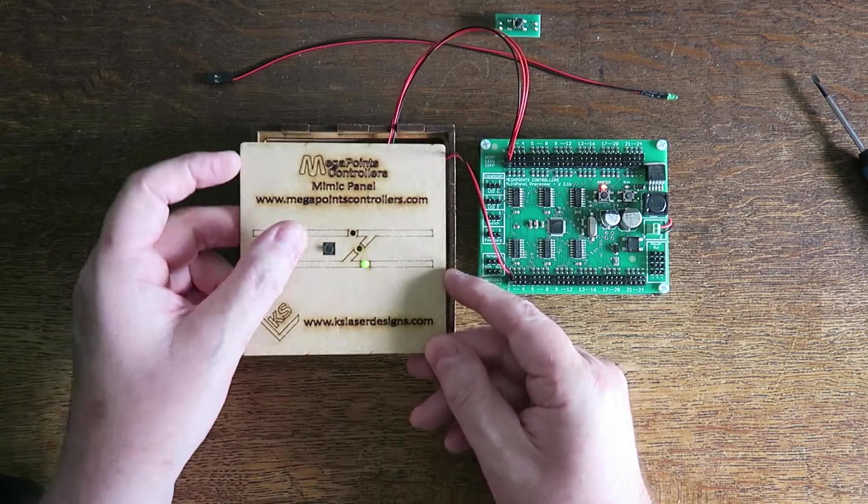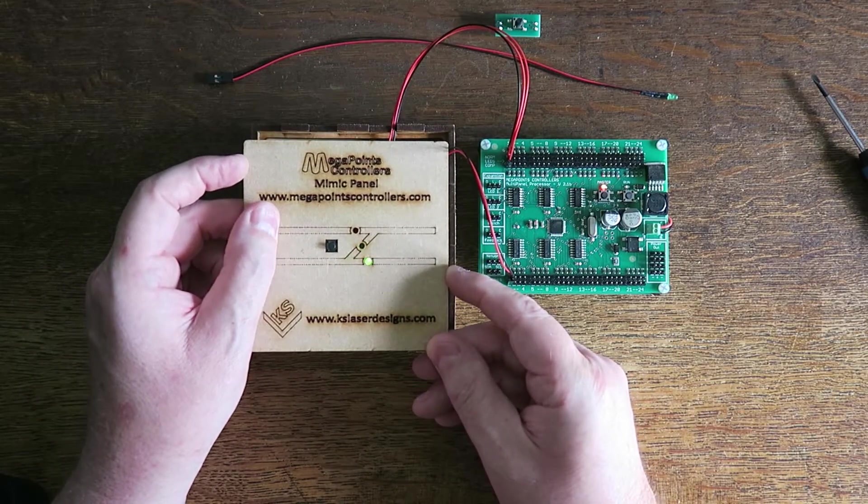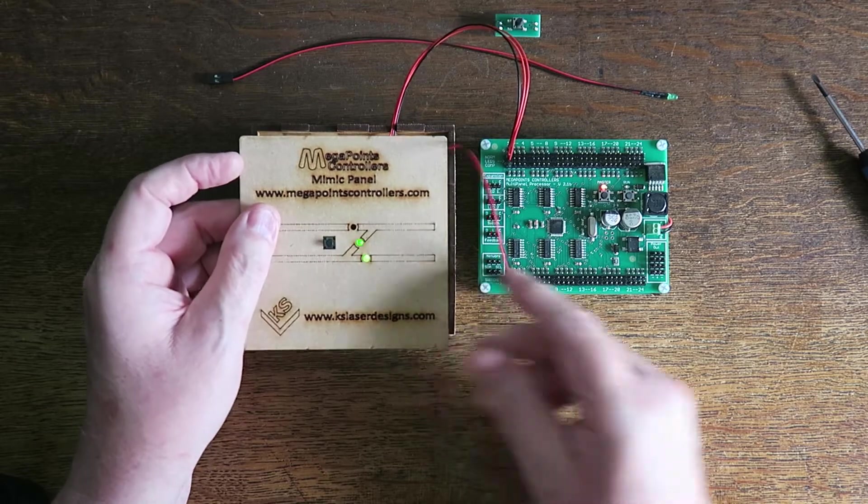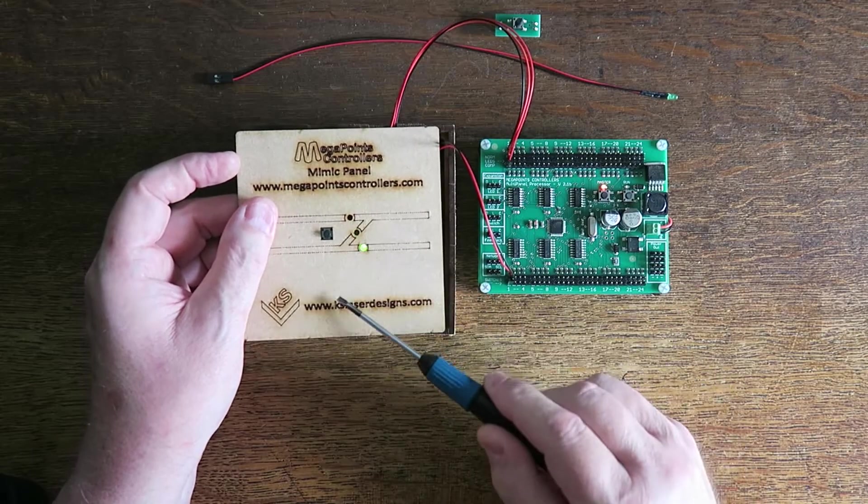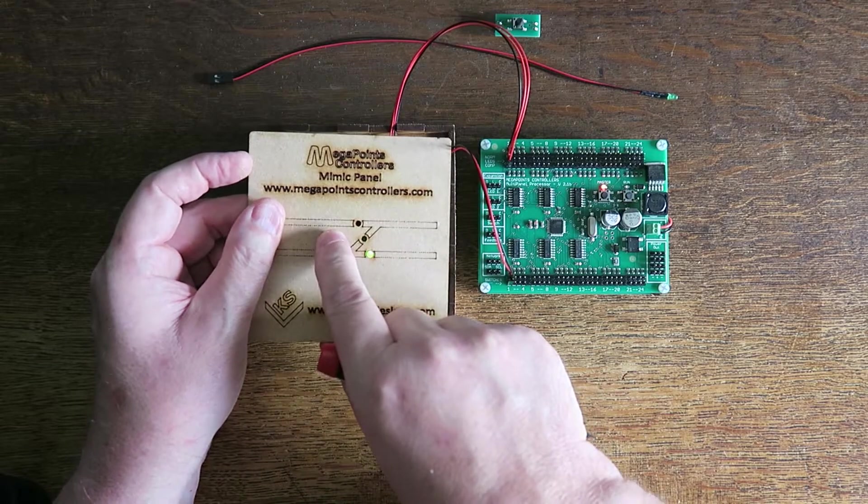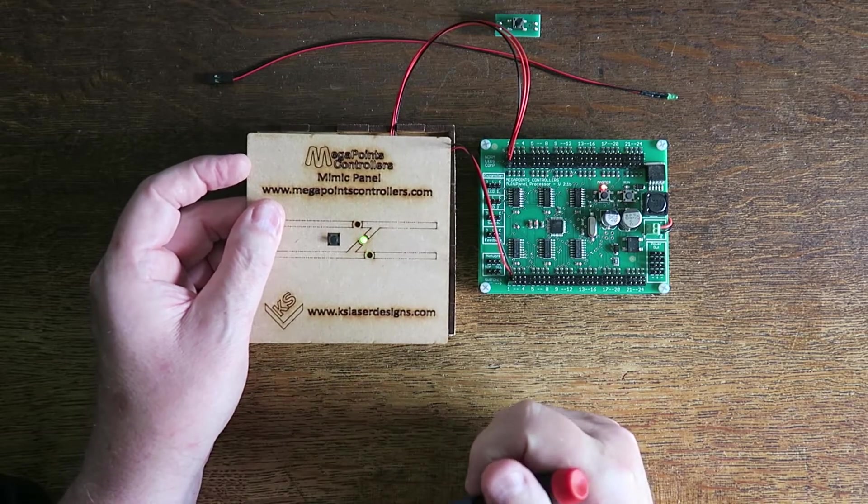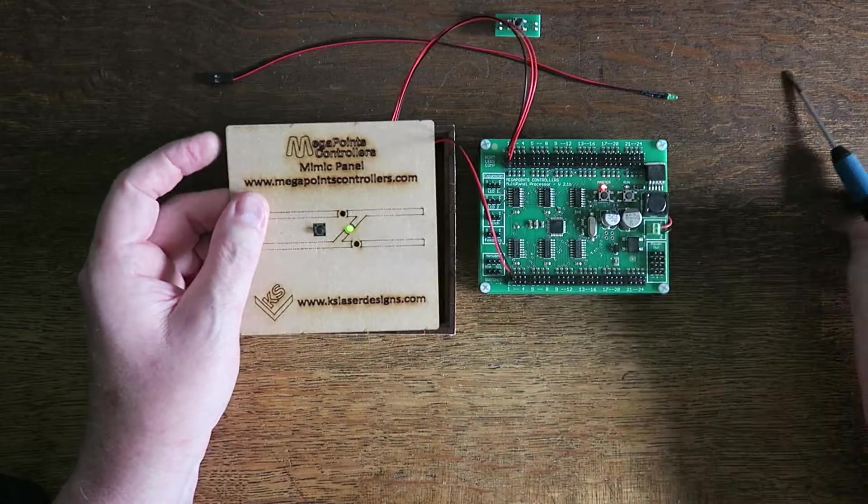So you can see here, when I press the button, I toggle, press the button again and it toggles back. So that's a single set of points moving straight and through the crossover.